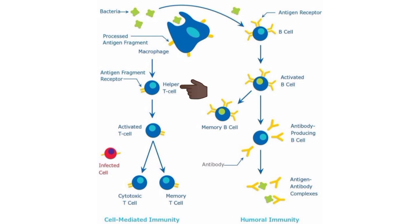This activates the helper T cells through a series of events. The helper T cells recognize the antigen displayed on the surface of the antigen-presenting cell using their surface receptor protein called the T cell receptor. Recognition of the antigen initiates a complex interaction between the helper T cell receptor and the antigen, which activates the helper T cells. At the same time, macrophages release interleukin-1, which facilitates the activation and proliferation of helper T cells. The activated helper T cells proliferate and enter the circulation for further action.